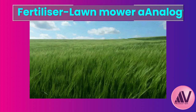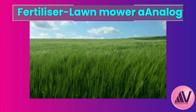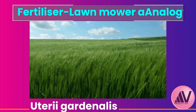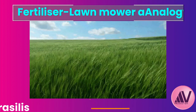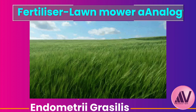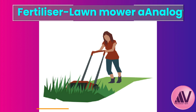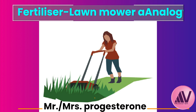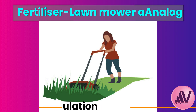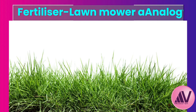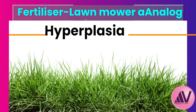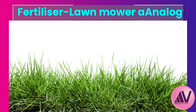Professor Virkud uses a fertilizer-lawnmower analogy. The uterus is a garden, and the endometrium is the grass. Estrogen from the ovaries is the fertilizer — the grass loves it. Progesterone is the lawnmower, doing the monthly mowing, the shedding. But the lawnmower only works when it gets orders from ovulation. In hyperplasia, ovulation isn't happening regularly, so progesterone stays parked, but estrogen keeps coming. The grass just keeps growing, unchecked — that's the hyperplasia.